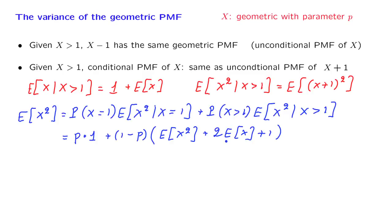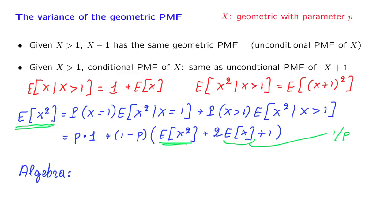We know what the expected value of x is — the expected value of a geometric is 1 over p. What we are left with is an equation involving a single unknown, the expected value of x squared, and we can solve this linear equation for that unknown. Carrying out the algebra, we obtain that the expected value of x squared equals 2 over p squared minus 1 over p.